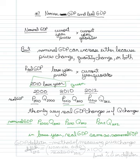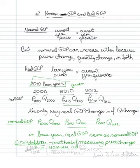A GDP deflator is one method of measuring price changes. Essentially, the equation is nominal GDP divided by real GDP, times 100.